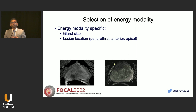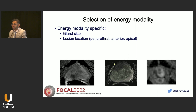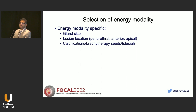For apical lesions — very distal apex — most thermal energy modalities risk damaging the sphincter and causing incontinence. In that situation, you would likely go with something non-thermal, like irreversible electroporation (IRE). So depending on what energy modalities you have available, you need to keep that in mind before offering focal therapy to a patient.